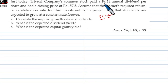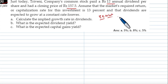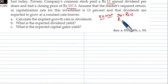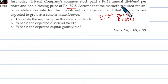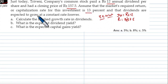Problem 5: A company has paid Rs. 10 annual dividend in the first year and had a closing price of Rs. 80. D0 = Rs. 157.5. The market required return, or capitalization rate, for this investment is 13%, and the stock is expected to grow at a constant rate.